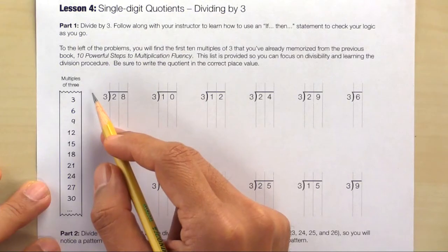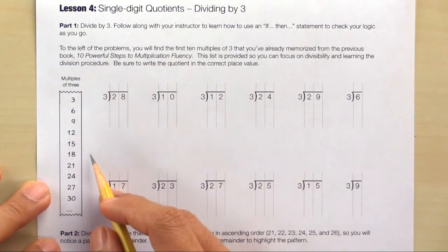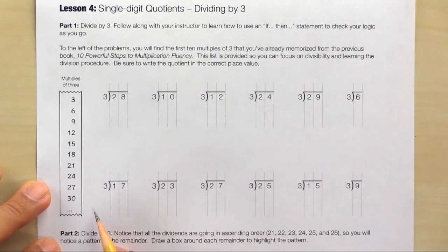Lesson 4, Single-Digit Quotients Dividing by 3. Here are the first 10 multiples of 3 which students have already memorized. It's here so that we can focus on divisibility and on the division procedure.